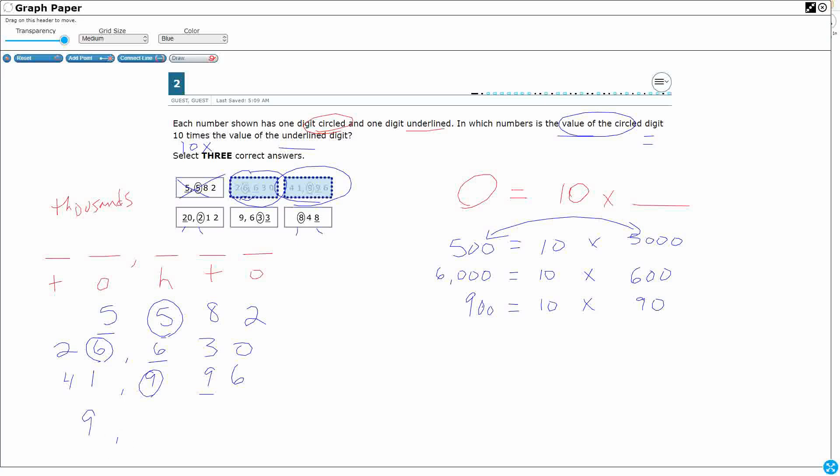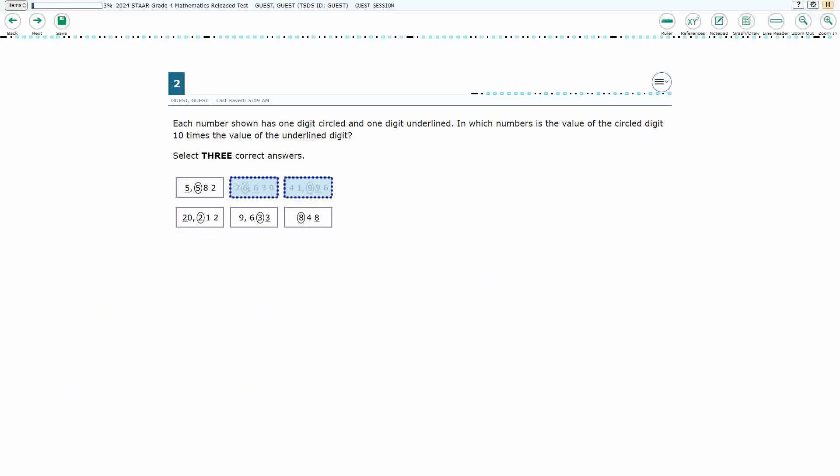That 9,633. Because for it to be 10 times, they need to be next to each other. So that's going to be a 30 equals 10 times 3. And yes, that does work. So that is my final answer. That's how we get full credit.